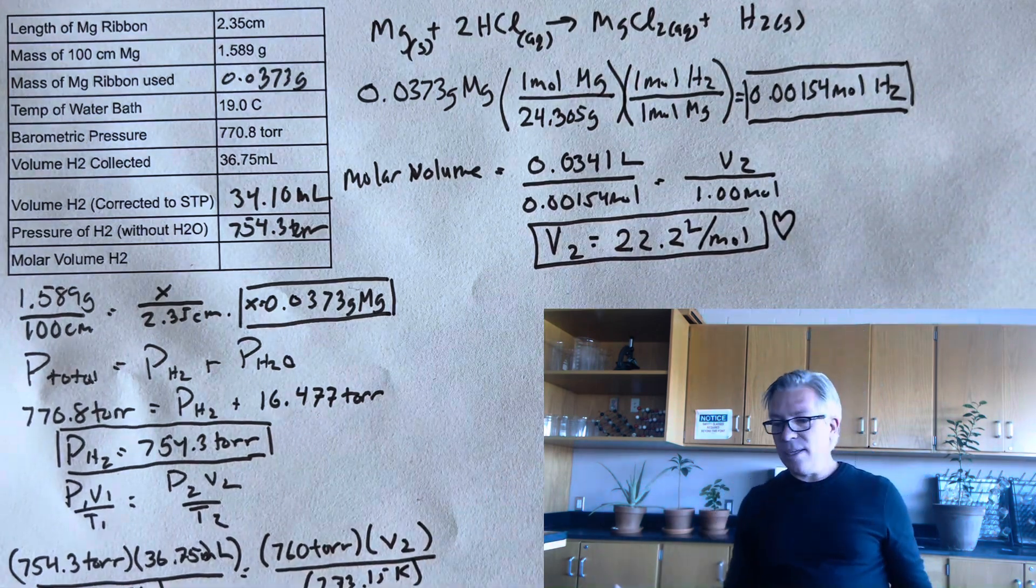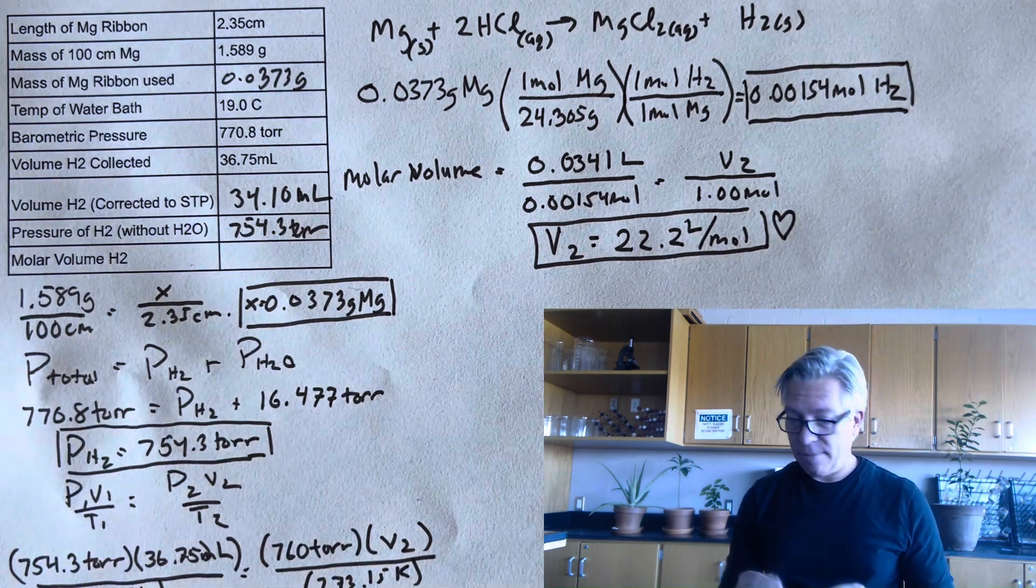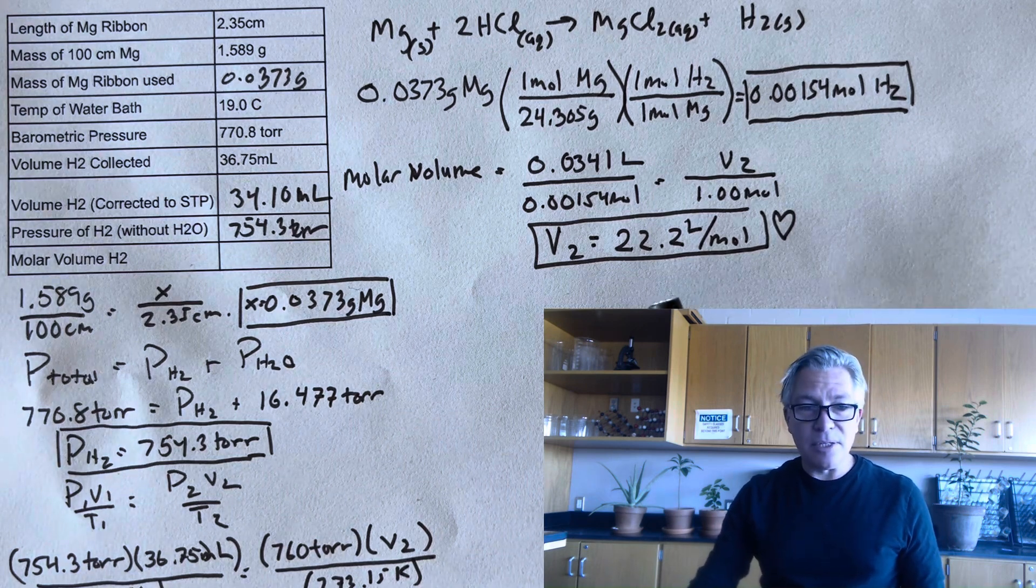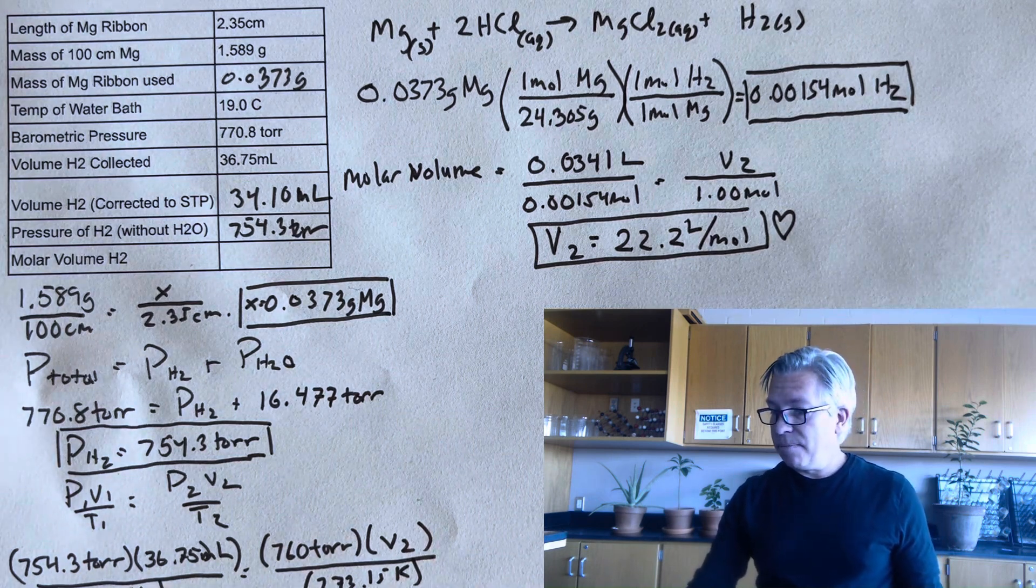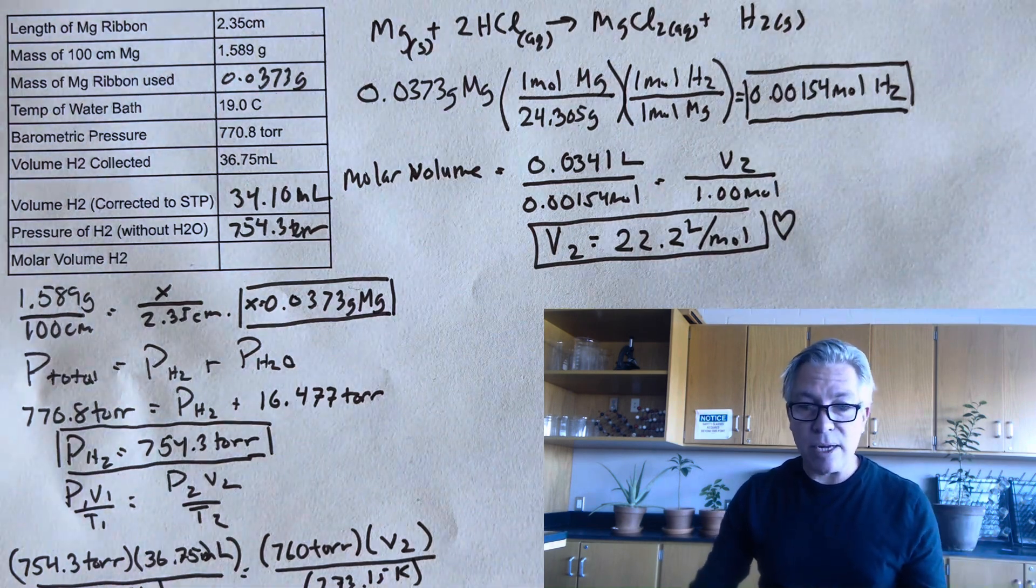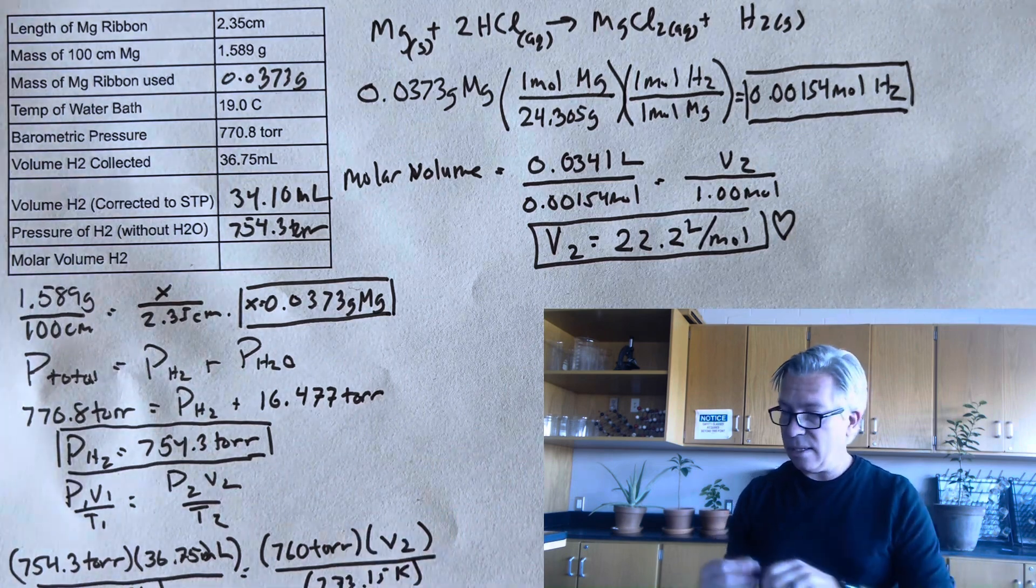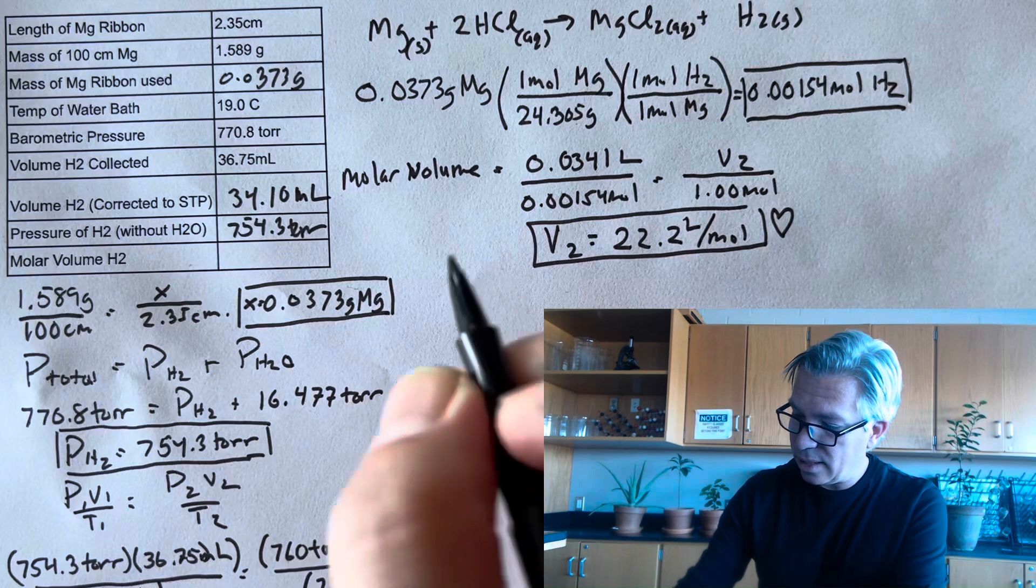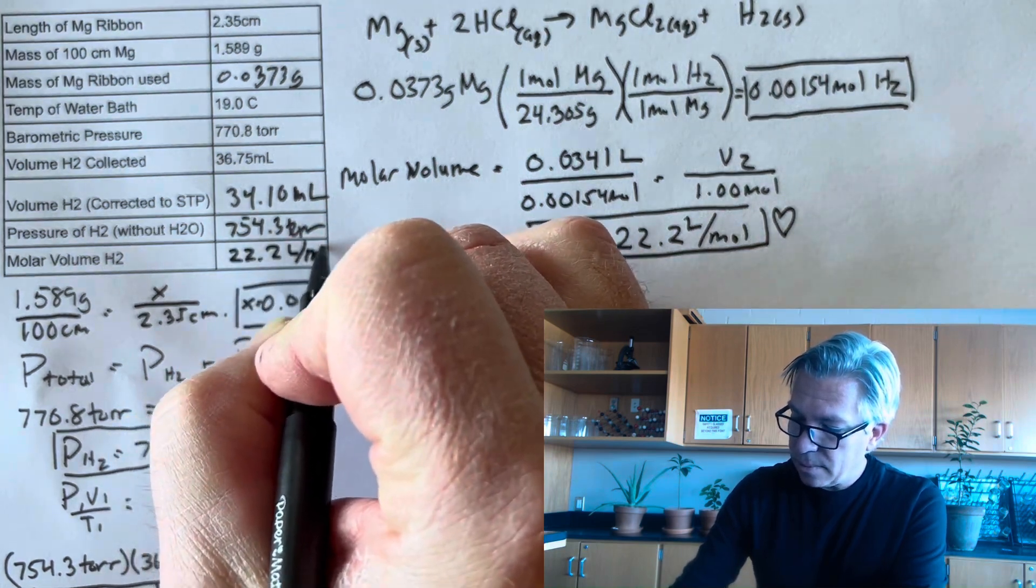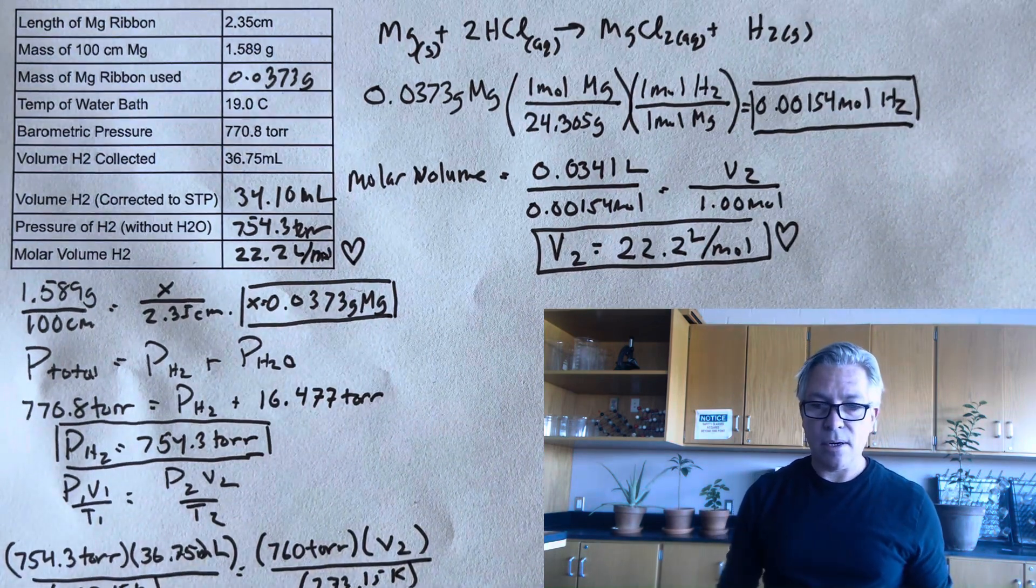All right. So slightly different than Avogadro's constant, which is 22.4 liters per mole at standard temperature and pressure. But I would say I'm pretty pleased with that. It's not bad. You know, I'm pretty close. Maybe in your travels, your chemistry travels, you'll do better than me. But as long as you do your best and carry through the calculations like this, 22.2 liters per mole. We'll put a little heart next to that, because I think that's a pretty good result.